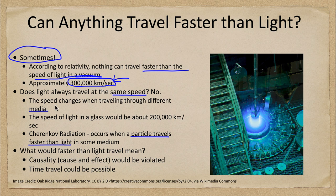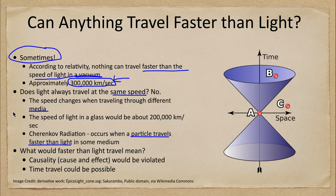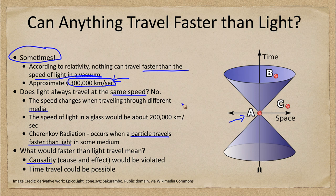Now, what would happen if we could travel faster than light? It causes a lot of problems with what we call causality — cause and effect would be violated. Here we have a spacetime diagram with space on the x-axis and time on the y-axis. Anything within this cone is a possibility. You're currently at point A; you can get to point B because that involves traveling at a speed less than the speed of light.